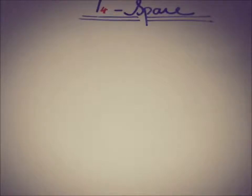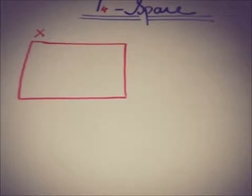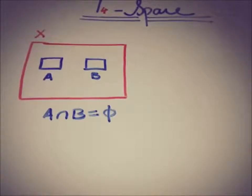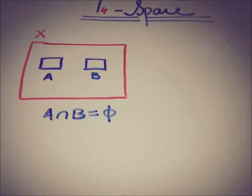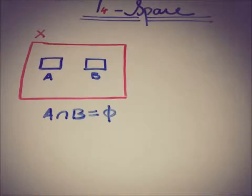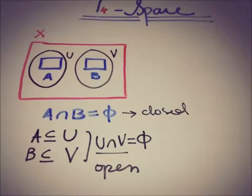Before going to the concept of T4 space, that is a normal space — what is a normal space? If we have a topological space and there are two distinct closed sets A and B whose intersection is empty, this space is said to be a normal space if we have two open sets that separate A and B and their intersection is also empty.